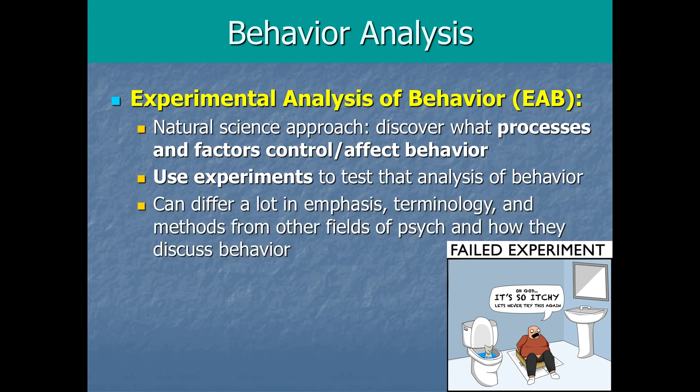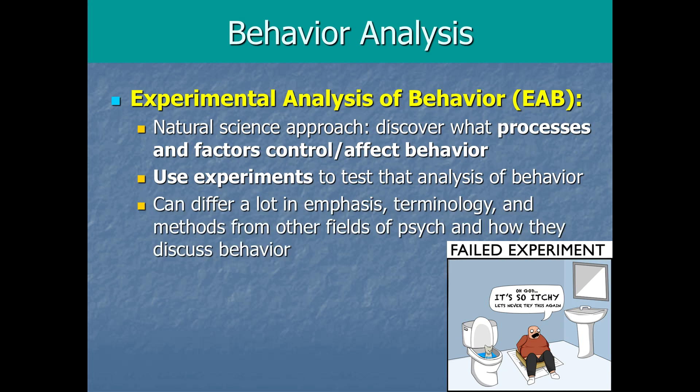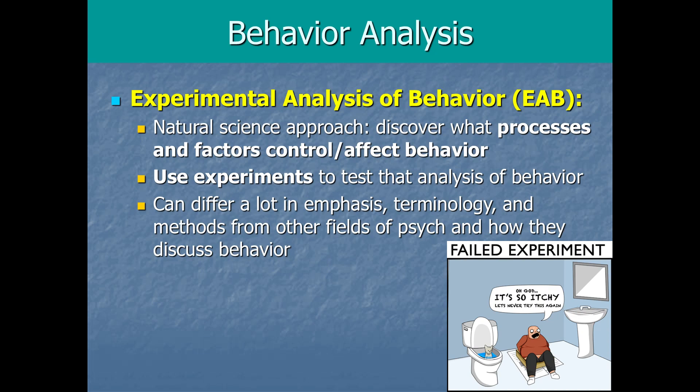To test the mechanisms of why a behavior occurs, we often need experimental control — bringing creatures, whether animals or humans, into a laboratory to test things experimentally. That's the experimental analysis of behavior. This natural science approach differs a lot in emphasis, terminology, and methods from other fields of psychology. This course is not going to sound anything like a cognitive psychology course. I don't think the two fields are fundamentally opposed, but they investigate questions through a very different lens using a different framework.